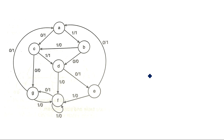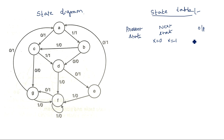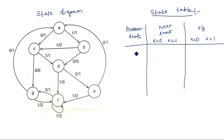Now for this state diagram, if you draw the state table, the columns we should consider are: present state, next state — when x equal to 0 and when x equal to 1 — and output also for x equal to 0 and x equal to 1, because it is a Mealy circuit. Present states are A, B, C, D, E, F, G — a total of 7 states.